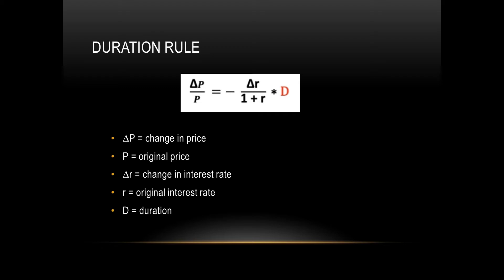Moving on to duration rule. This one's quite straightforward. It's just change in price over original price equals change in interest rate over 1 plus original interest rate times duration.